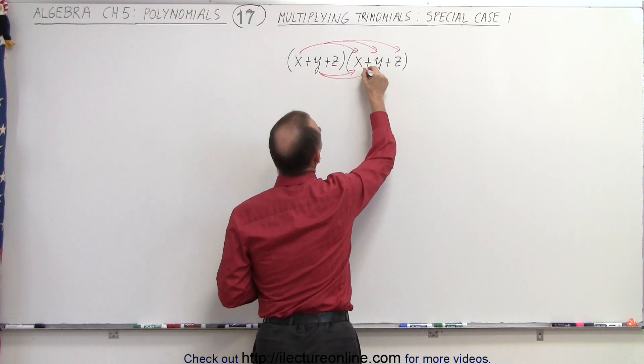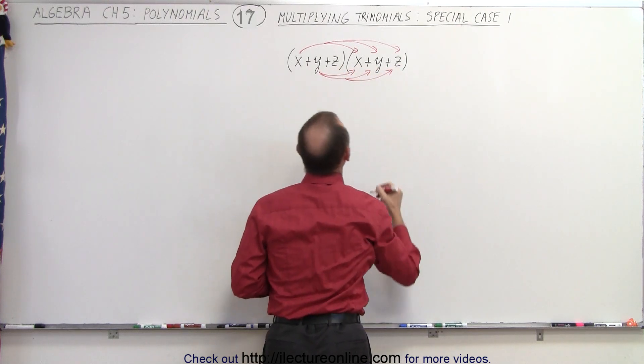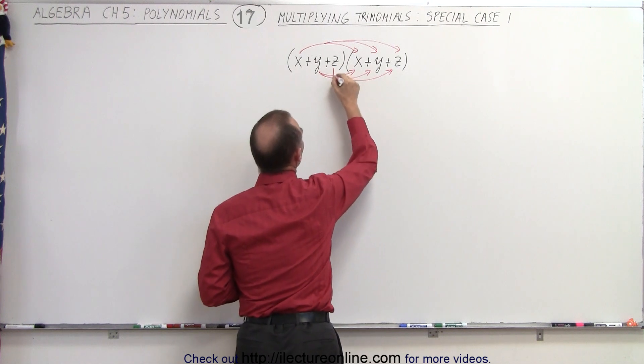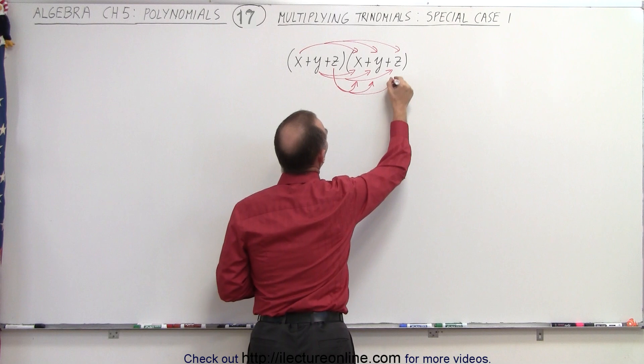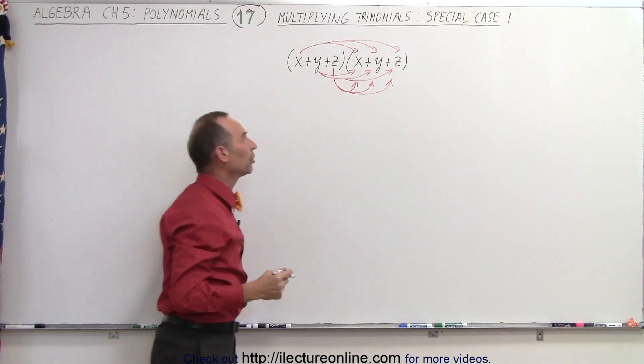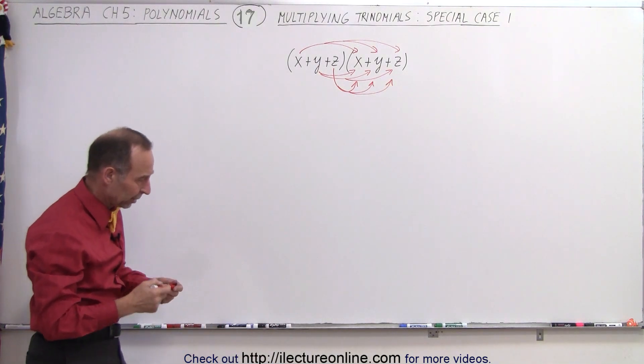The second term, multiply times each of the terms in the second trinomial. And then the third term, multiply times each of the terms in the second trinomial. Notice nine arrows, meaning nine products.